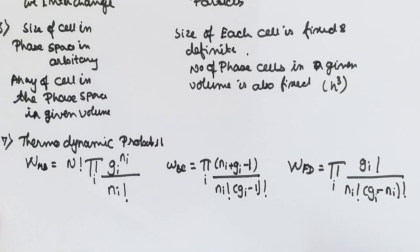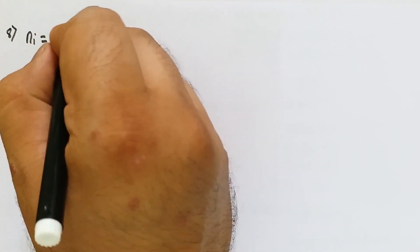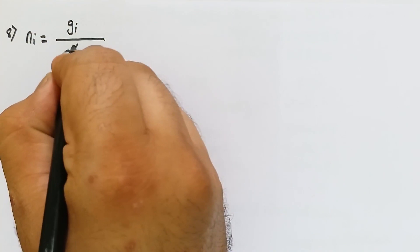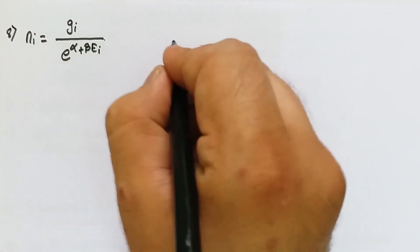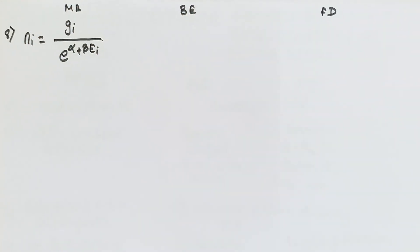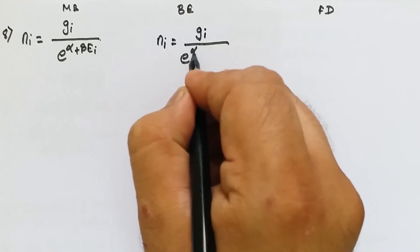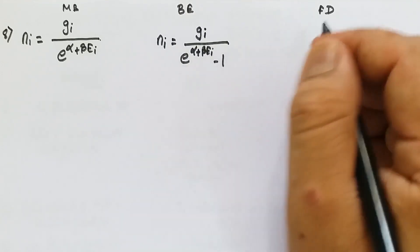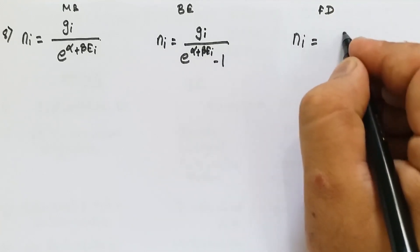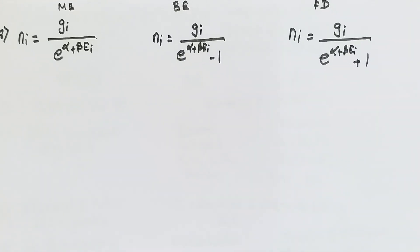The final expressions giving the number of particles n_i in the i-th state are: for Maxwell-Boltzmann, n_i = g_i · e^(α + βε_i); for Bose-Einstein, n_i = g_i / (e^(α + βε_i) − 1); for Fermi-Dirac, n_i = g_i / (e^(α + βε_i) + 1). The only difference between Bose-Einstein and Fermi-Dirac is the −1 versus +1 in the denominator.